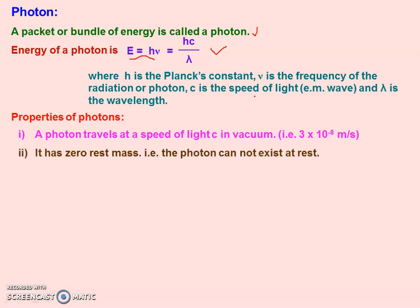Second, the rest mass of a photon is zero. But a photon cannot exist at rest. It means if a photon were at rest, its mass would be zero. But since it does not exist at rest, every photon has mass — however, that mass is very small.